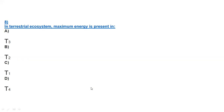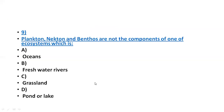Plankton, nekton, and benthos are not components of which ecosystem? These are components of oceans, freshwater rivers, ponds, and lakes — not of grassland. So the correct answer is grassland. These terminologies will not be associated with the grassland ecosystem.